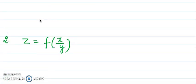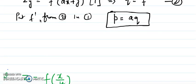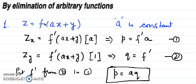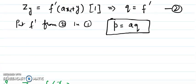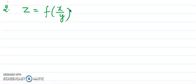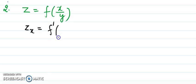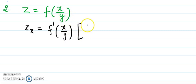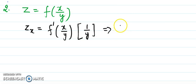Let's see another example. When there is one arbitrary function of one expression, a first-order differential equation can be derived — you don't need to keep differentiating further. For this example, differentiating z_x with respect to x: the ordinary differentiation of f gives f', and the derivative of (x/y) with respect to x is 1/y, so p = f'(x/y)·(1/y). I'll call this equation number one.